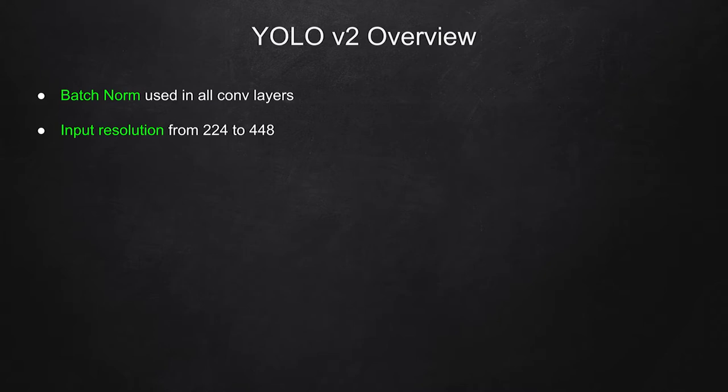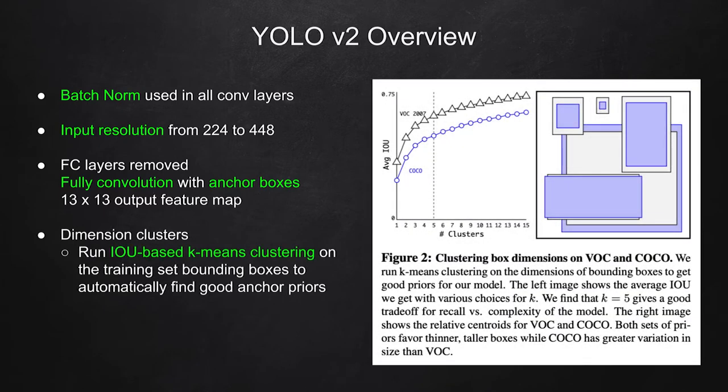Also, fully connected layers, which was used in YOLO V1 model, was removed. Instead, the model uses fully convolutional layers with anchor boxes to increase the accuracy of the model. The prior sizes of these anchor boxes are also obtained using IOU-based k-means clustering on the training set. This way of obtaining the boxes is better than relying on handcrafted anchor box sizes. As it's shown in the right figure, the authors used cluster of size 5 to get a good trade-off between recall and model complexity.